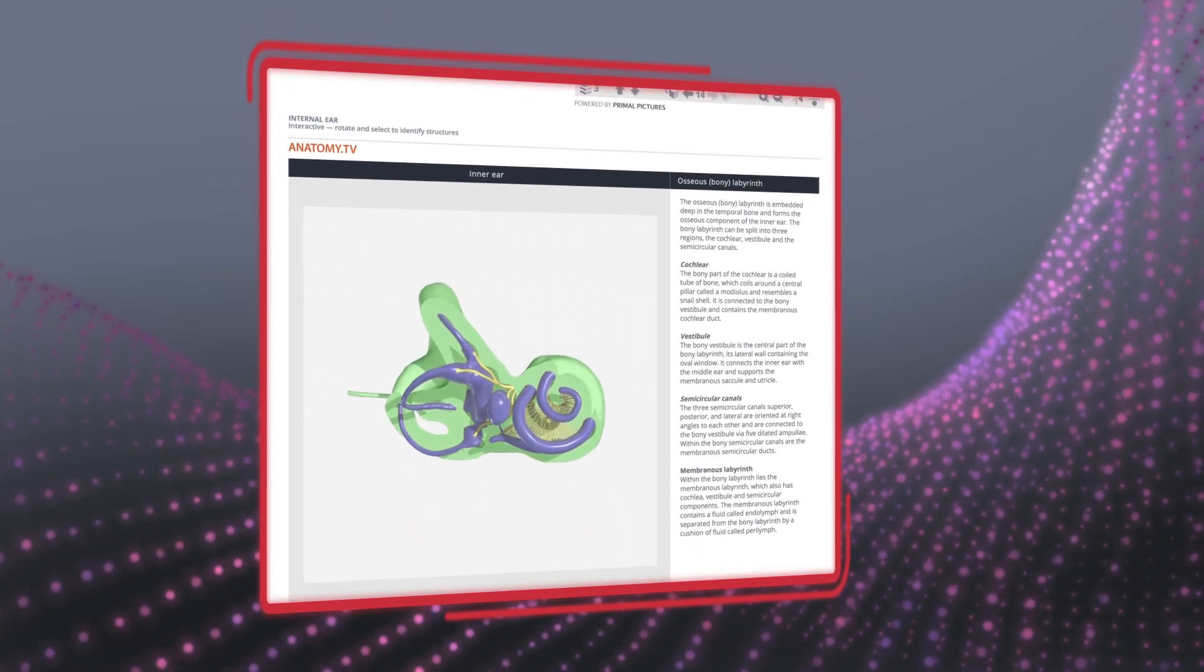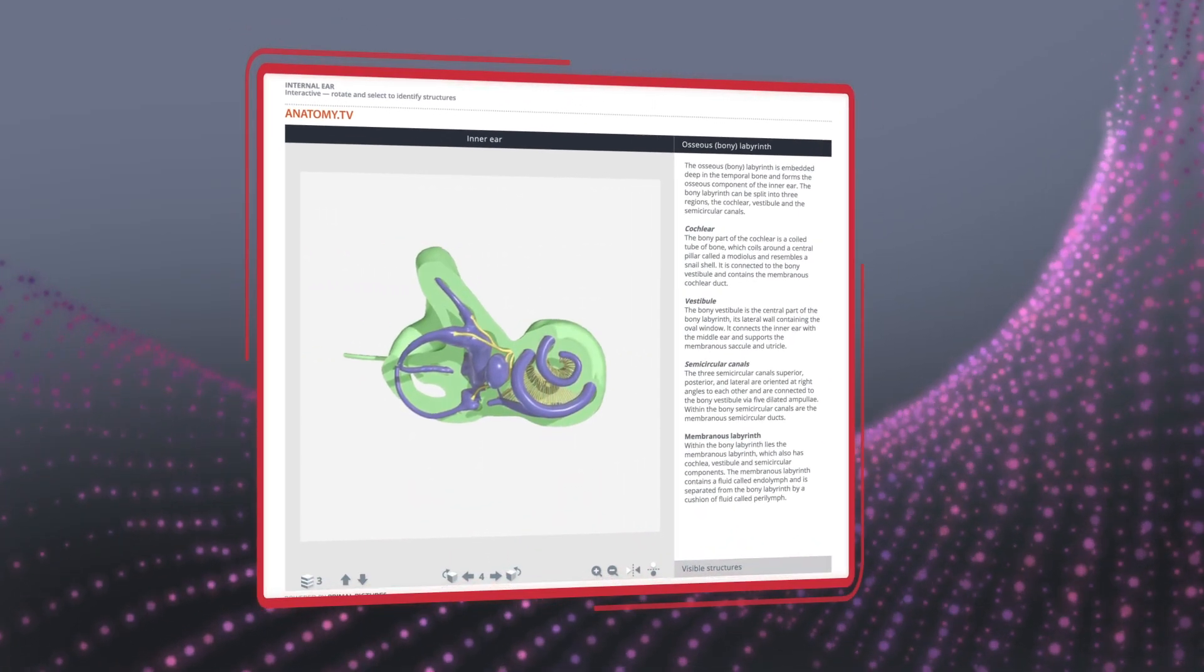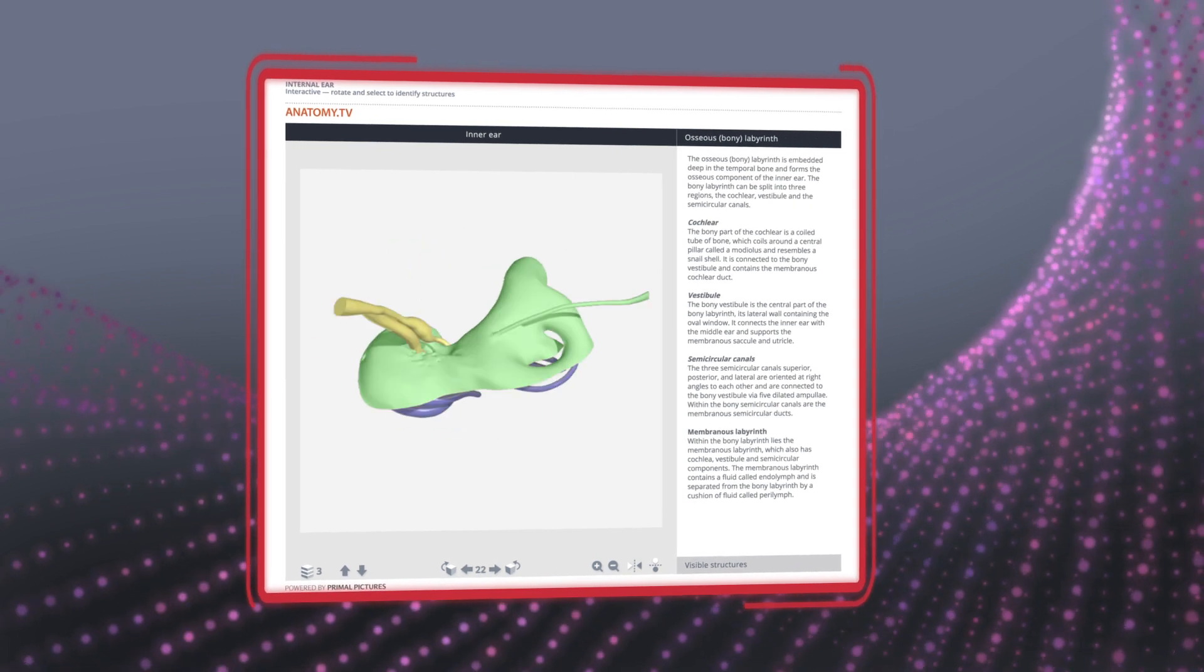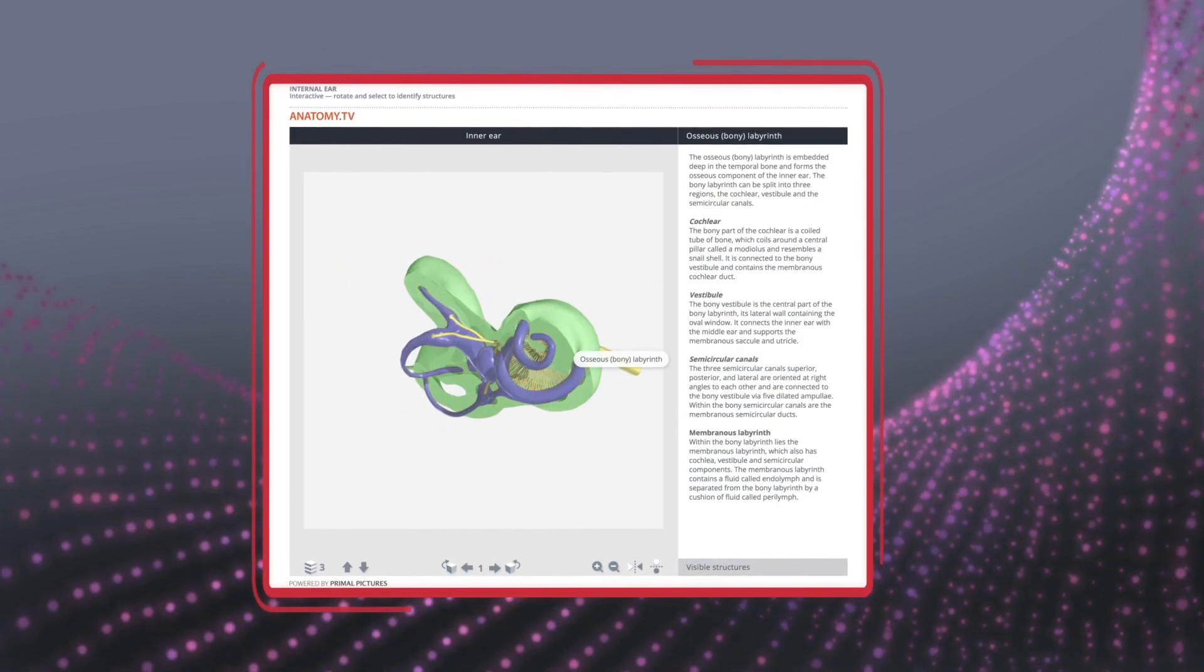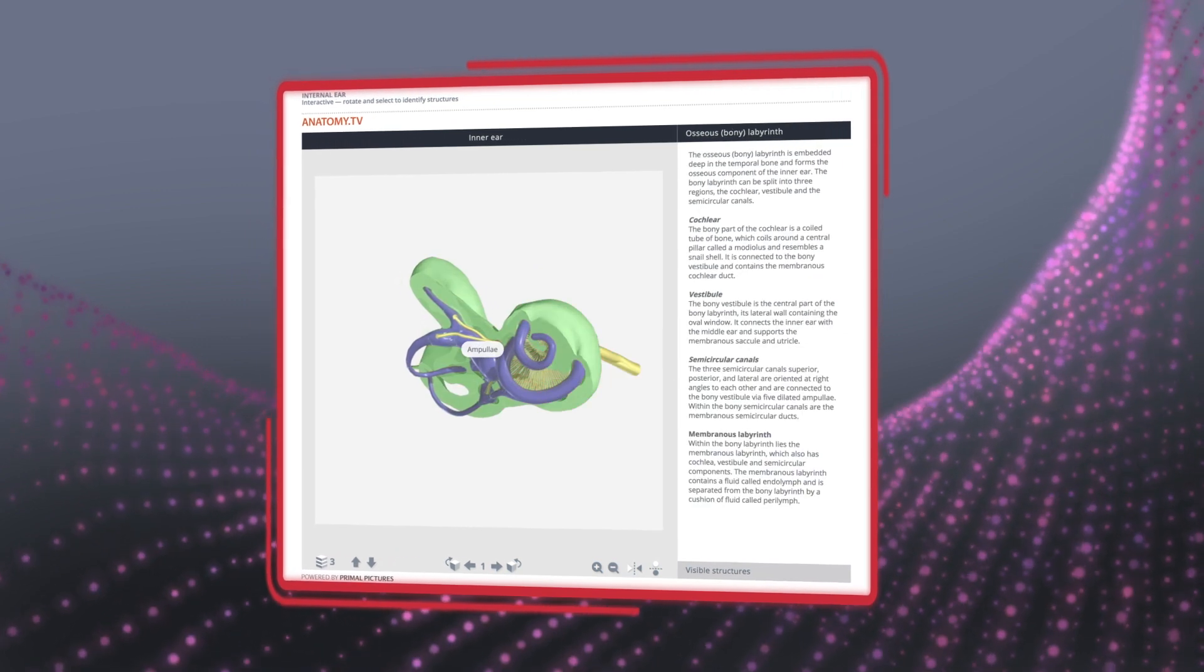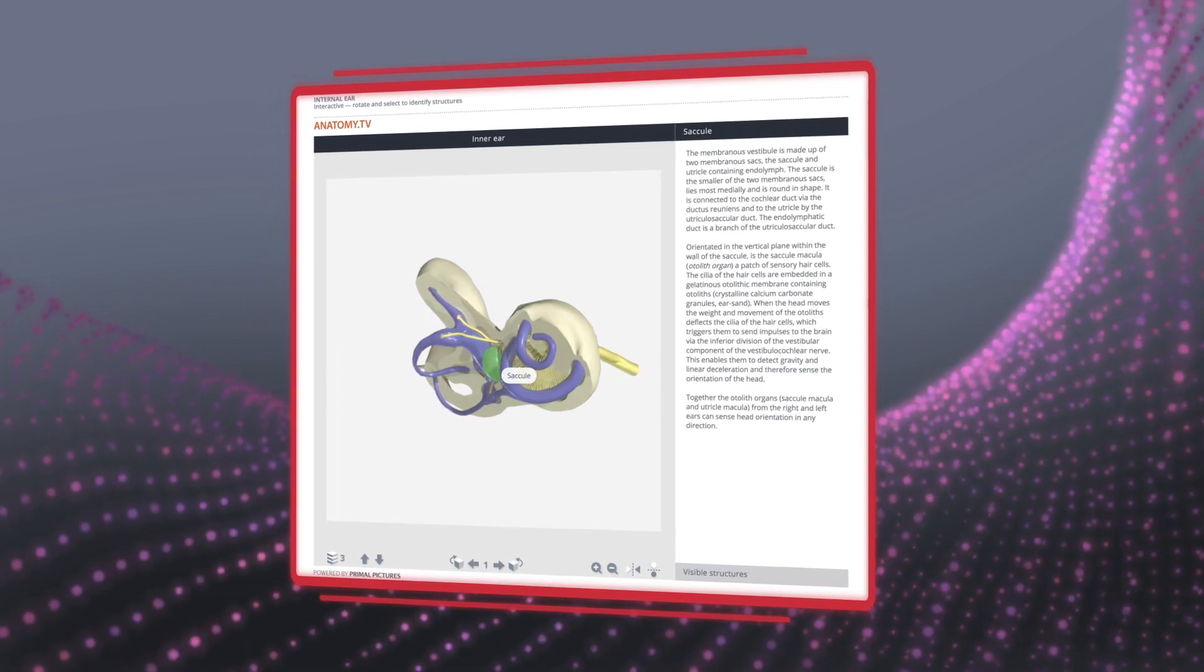Using embeddable viewer also ensures you retain the dynamic nature of the content, meaning it will rotate, layer, highlight, and display labels just as it does in the Primal platform to aid visual learning for your users.